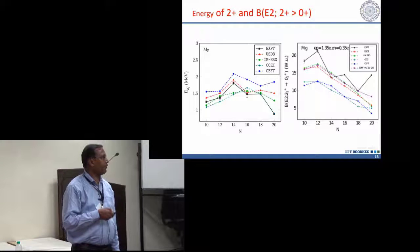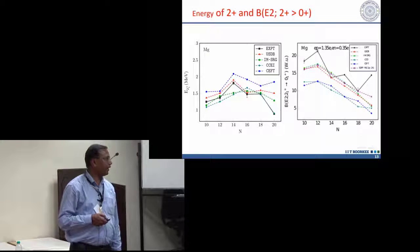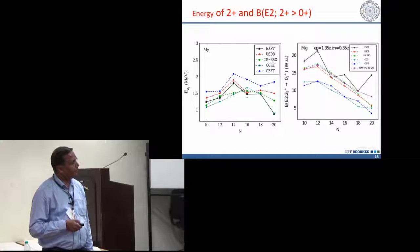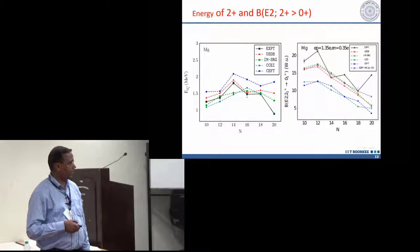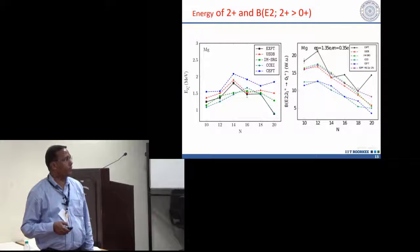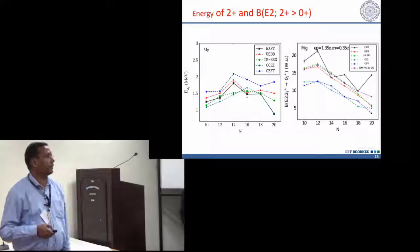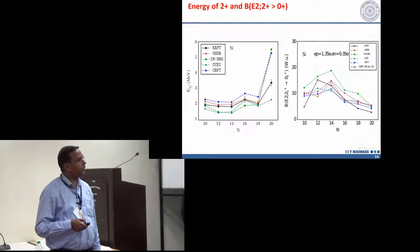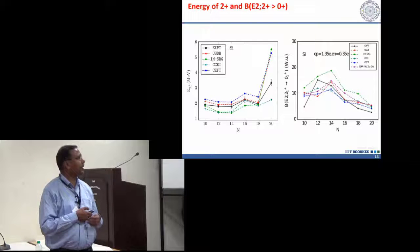We have the magnesium isotopes which is more important here. You can see here, again there is a problem in N equal to 20 regions, but for lower neutron number there is no problem, even SD shell works very good. If we include the PF shell, you can see how the results are giving.